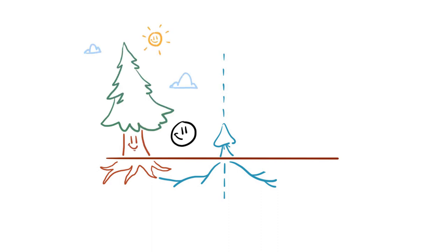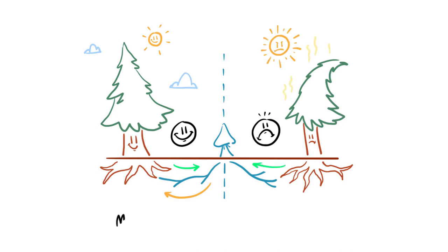Hence, network-forming fungi that usually help trees by providing nutrients could also make trees more vulnerable during times of drought stress and spread such stress among them.